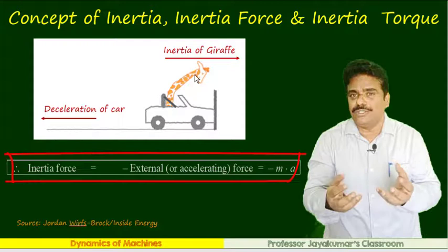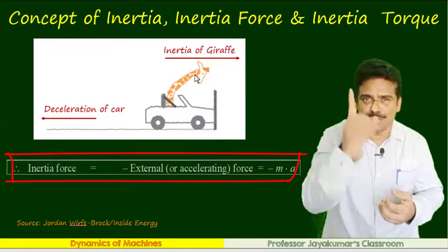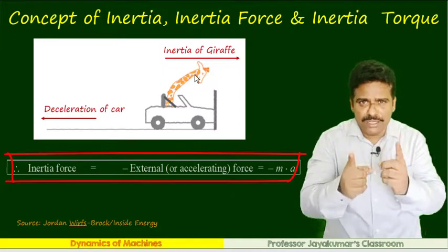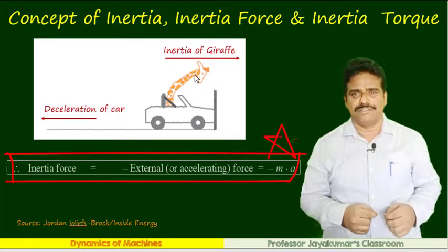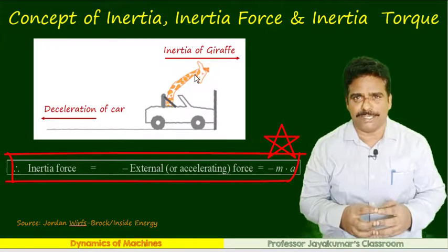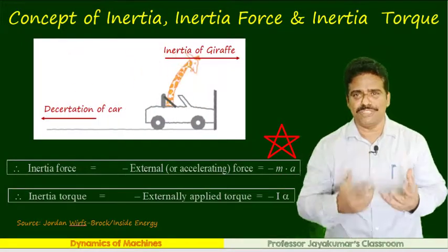This is the direction of deceleration of the car. In the opposite direction, the giraffe offers resistance against negative acceleration, that's why it goes bending forward. That property is known as inertia. The force is inertia force. Inertia force will be equal to external force, which is equal to ma, but inertia always opposes acceleration. Hence, I put inertia force equal to minus ma.